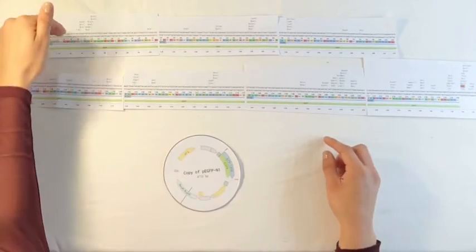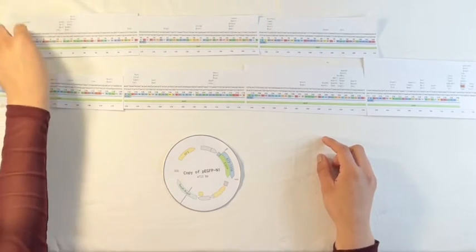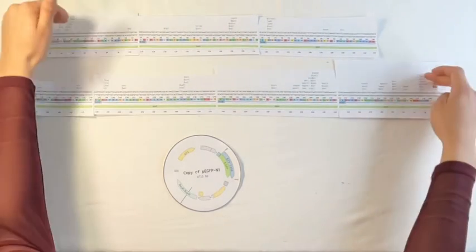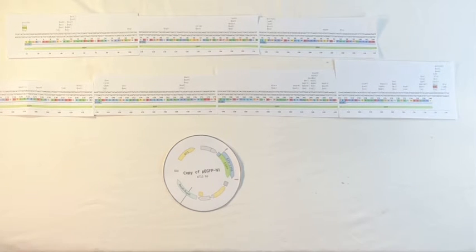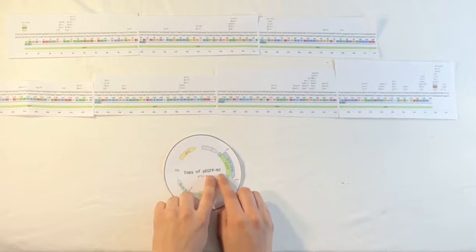We see that on the other side of this segment, and on this side, is the continuous strand of the rest of the pEGFP-N1 plasmid.